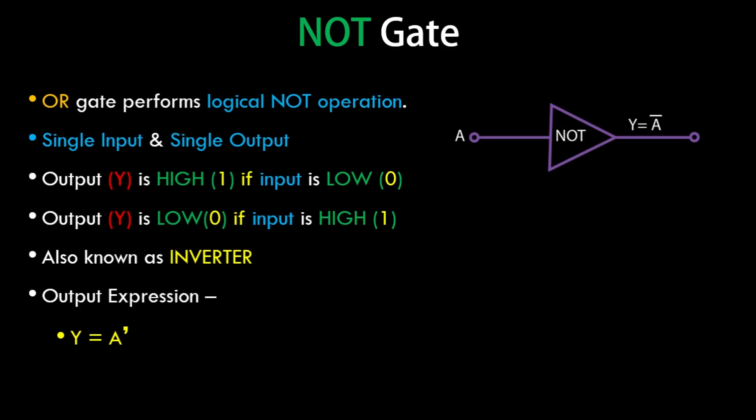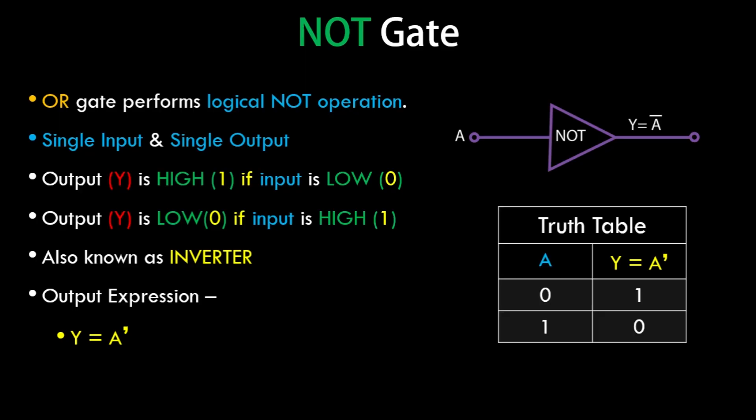The expression is Y equals A complement. Here's the symbolic representation of the NOT gate — we have a single input A and a single output Y equal to A complement. Here's the truth table: when A is 0, Y is 1, and when A is 1, Y is 0 — the values are inverted.